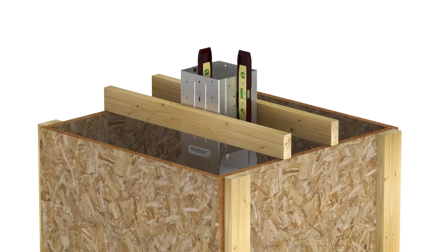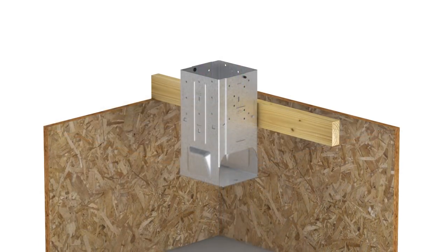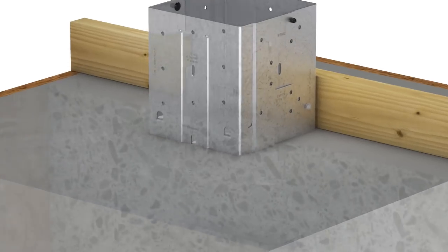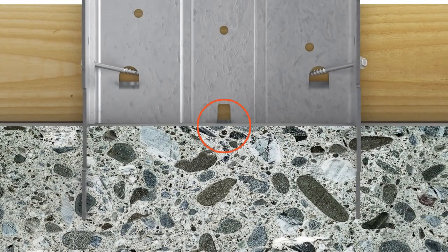Ensure the MPBZ is plumb. Then, pour the concrete until level with the exterior embedment line and the two internal square-shaped top of concrete tabs.